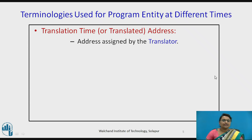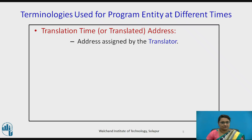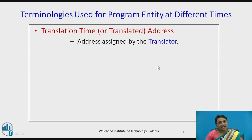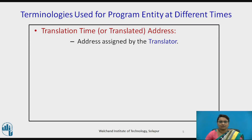Now let us see some terminologies used for the program entity at various different times. We have seen that the three steps are translator, linker, and loader, and accordingly the addresses of the programs may change. The first address is the translation time or translated address — the address assigned by the translator when it reads the source program and converts it into the object program.